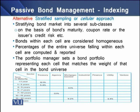We have an alternative to these difficulties, and that is the stratified sampling or cellular approach. First, we need to stratify the bond market into several subclasses, and that division or classification may be on the basis of a bond's maturity, coupon rate, or the issuer's credit risk.